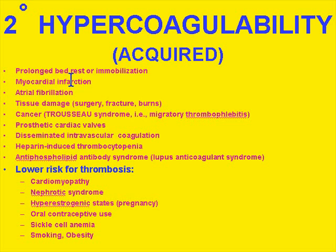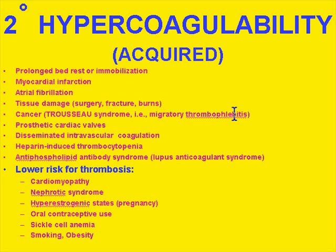Myocardial infarction can introduce problems in flow, especially in the cardiac chambers — particularly atrial fibrillation, in which the atria don't really beat but just quiver, representing clearly abnormal flow. Tissue damage can trigger tissue factor, whether from extensive surgery, fractures, or burns. People with cancers, especially GI or pancreatic cancers, can produce compounds with a direct thrombotic effect on veins — this is called Trousseau's syndrome. Prosthetic cardiac valves can also disrupt flow and trigger coagulation.